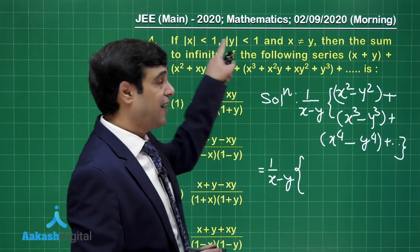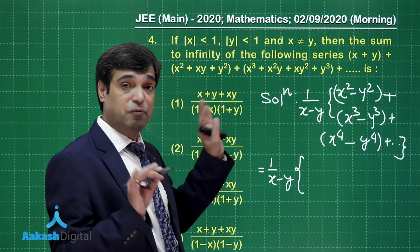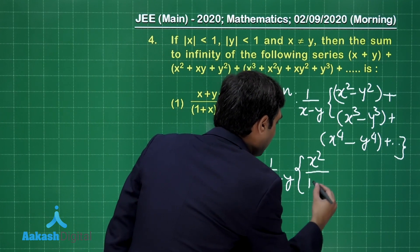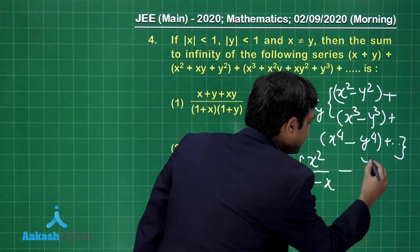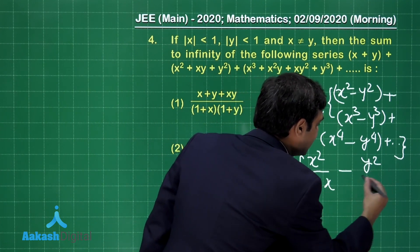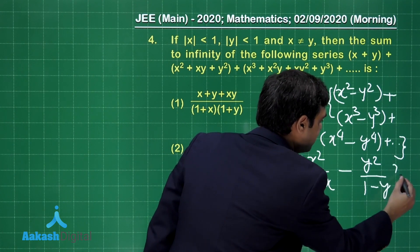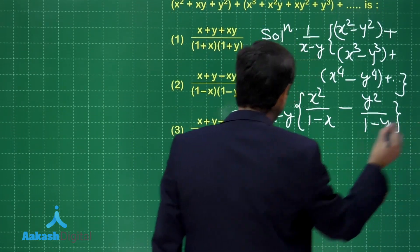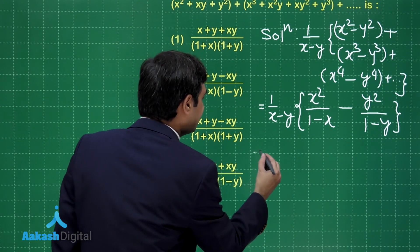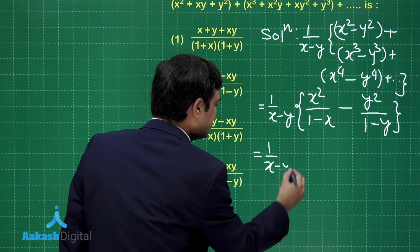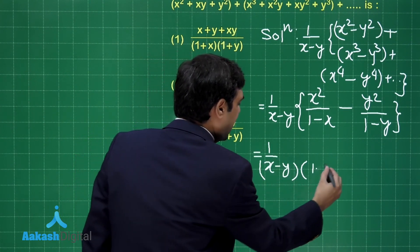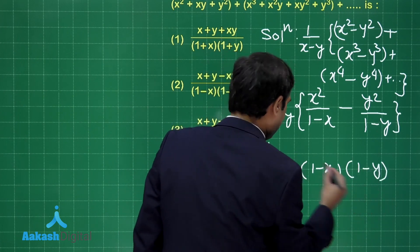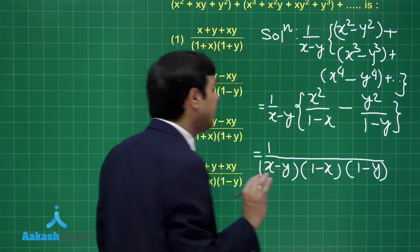Since modulus of x and modulus of y are both less than one, the sum of the two GPs can be obtained as: x² upon (1 minus x) minus y² upon (1 minus y). We then simplify to get 1 upon (x minus y), with (1 minus x)(1 minus y) in the denominator.